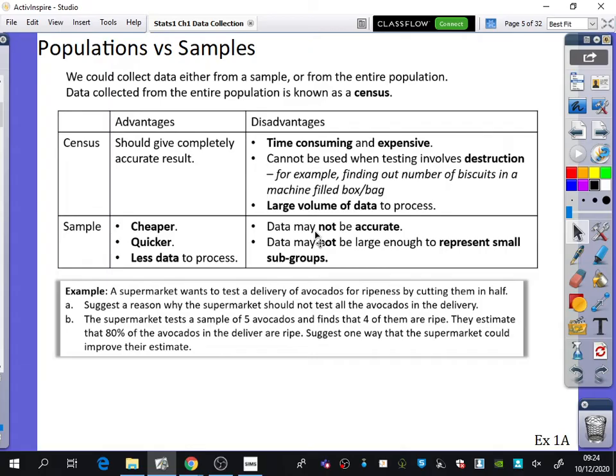Let's look at an example before we do practice questions from exercise 1A. A supermarket wants to test a delivery of avocados for ripeness by cutting them in half. First, suggest a reason why the supermarket should not test all the avocados in the delivery.